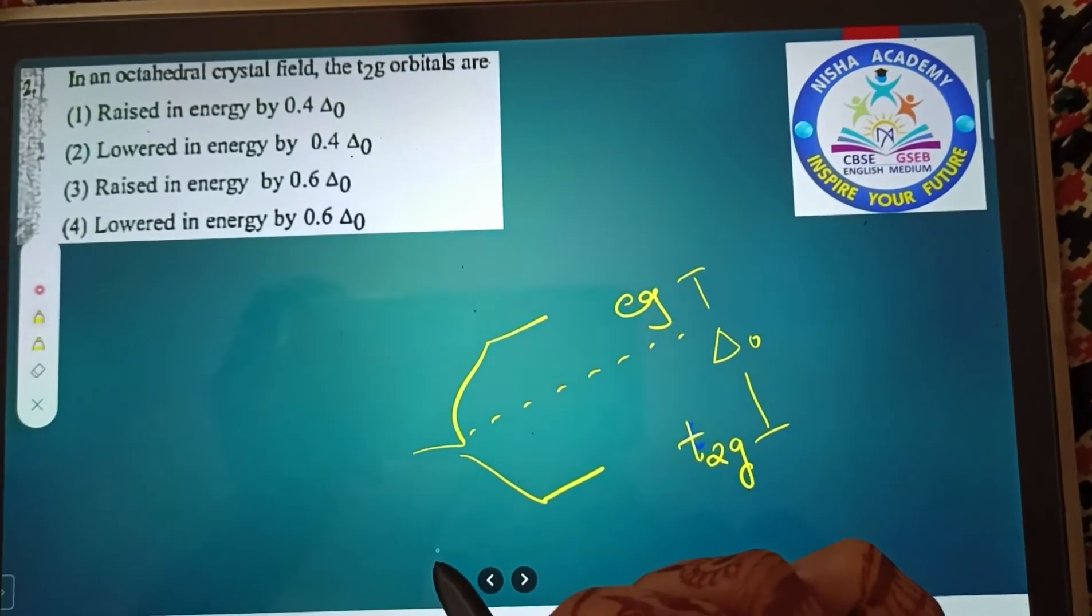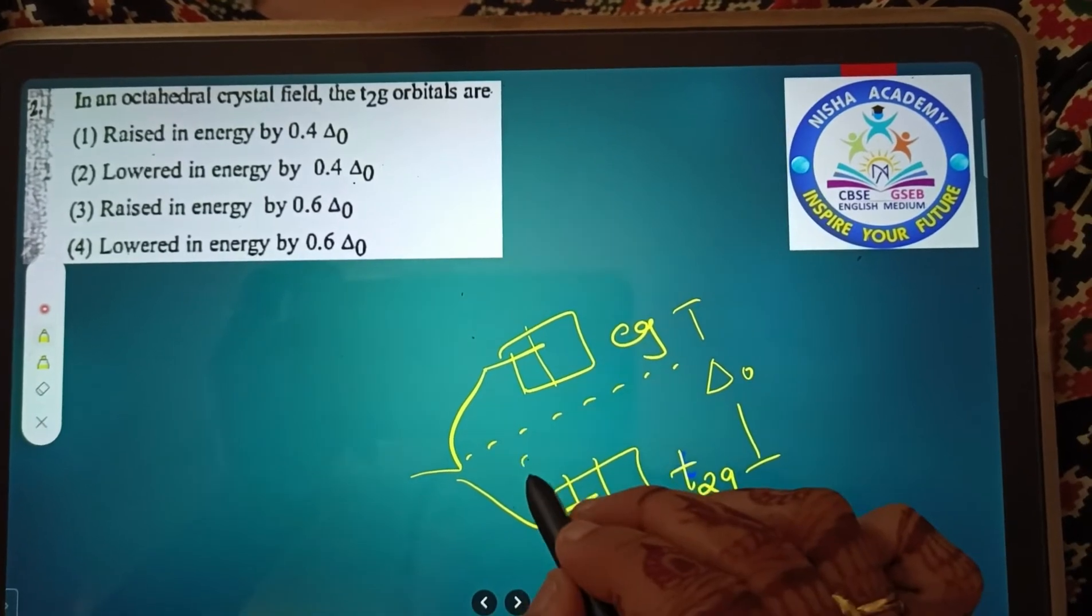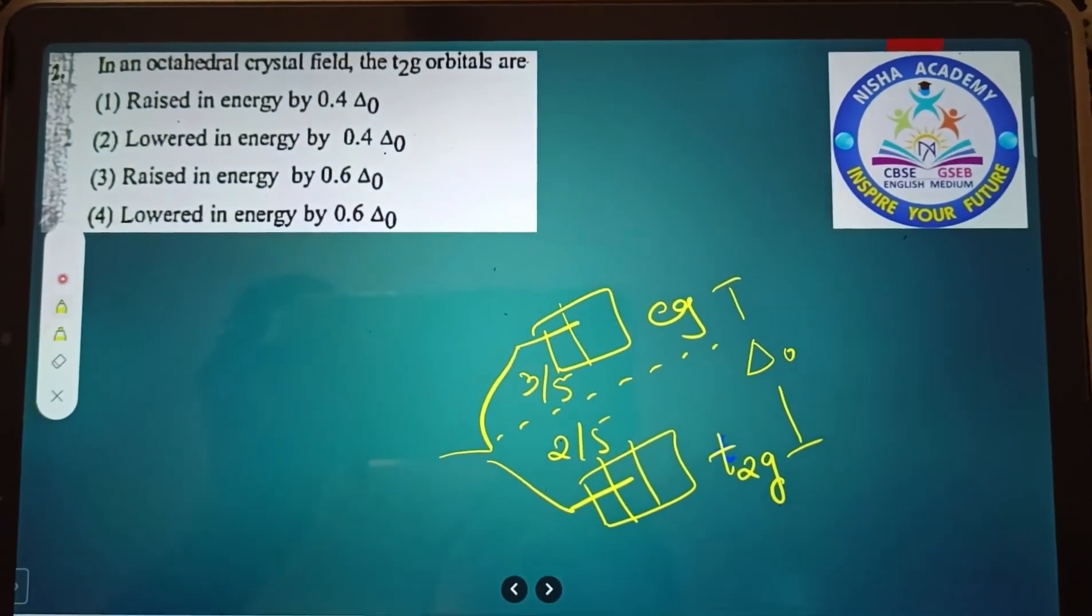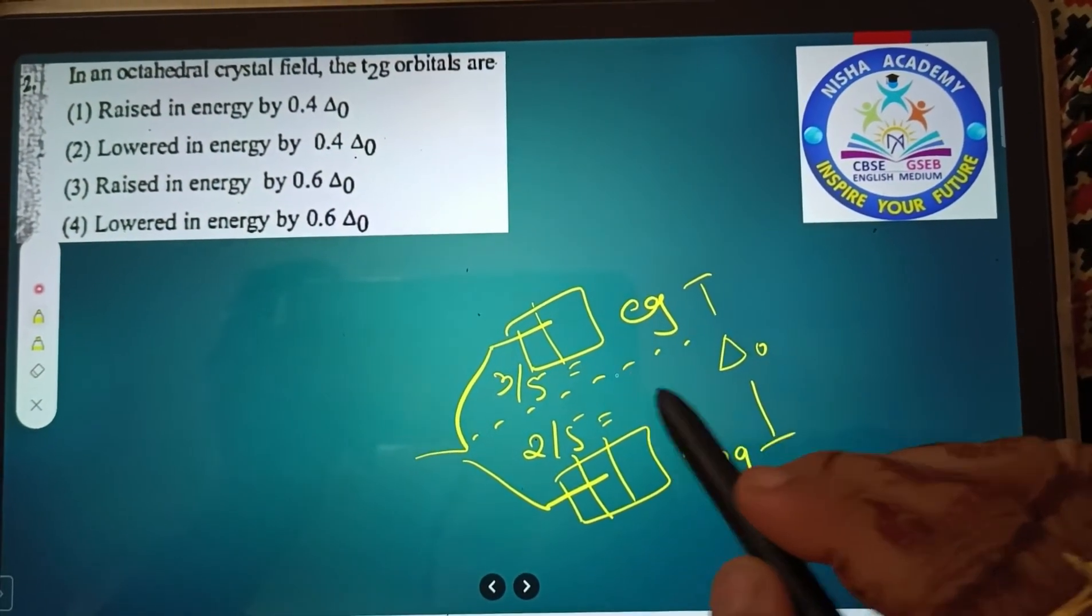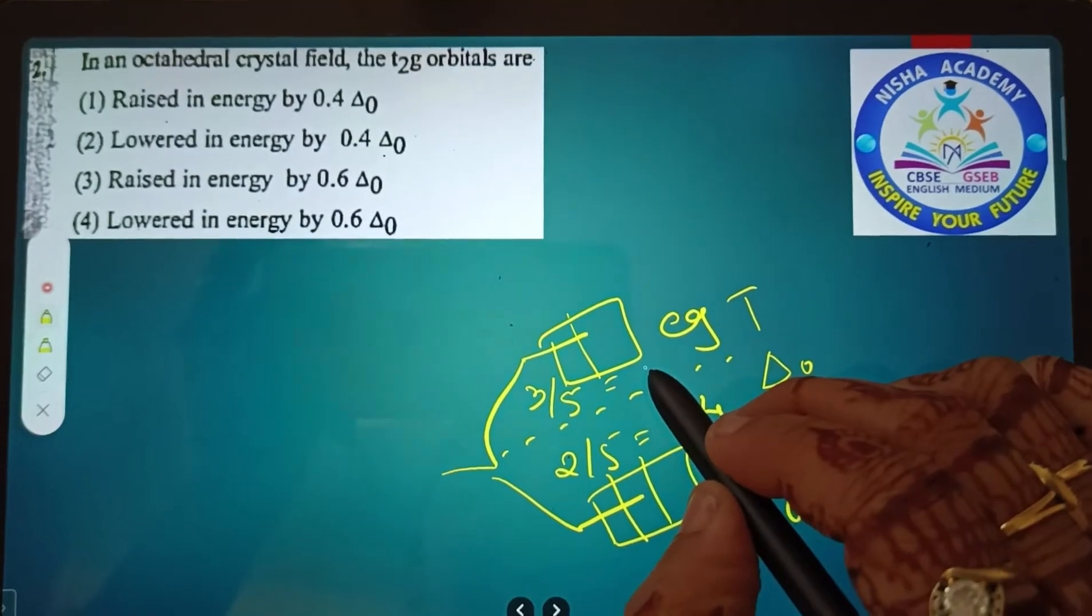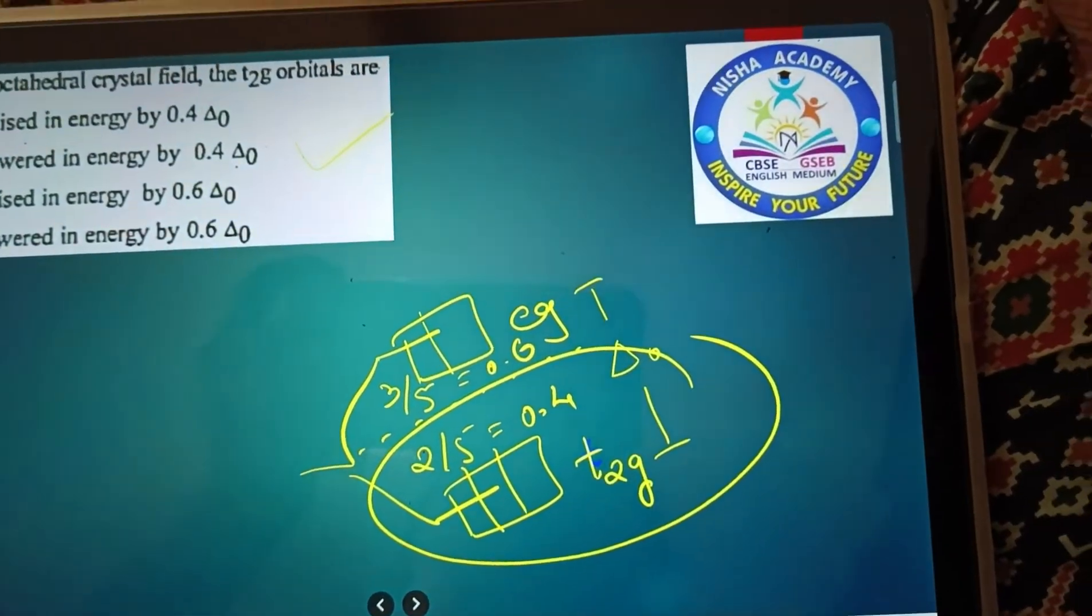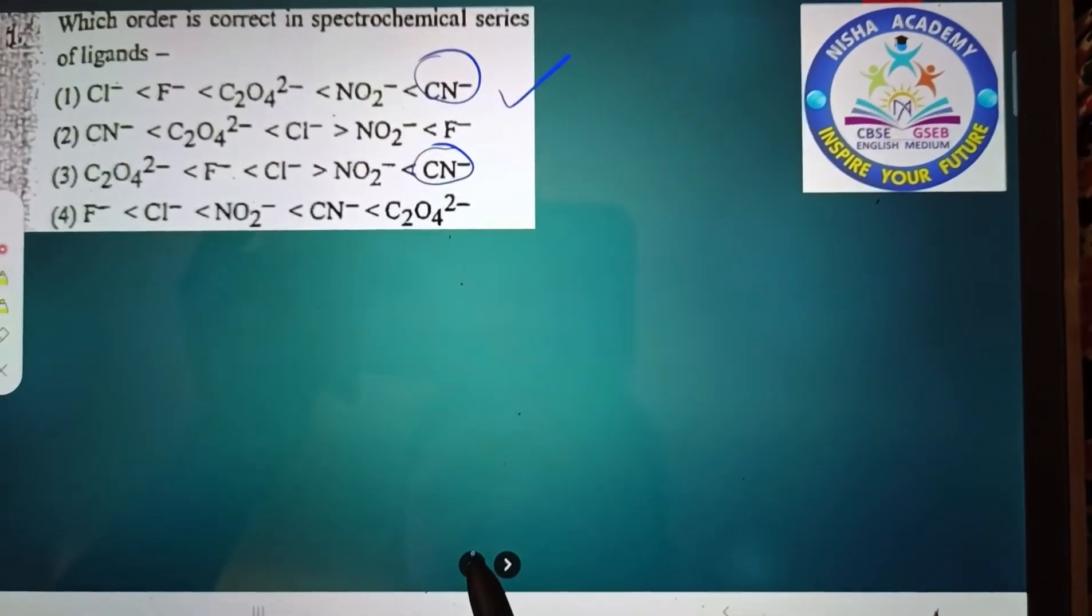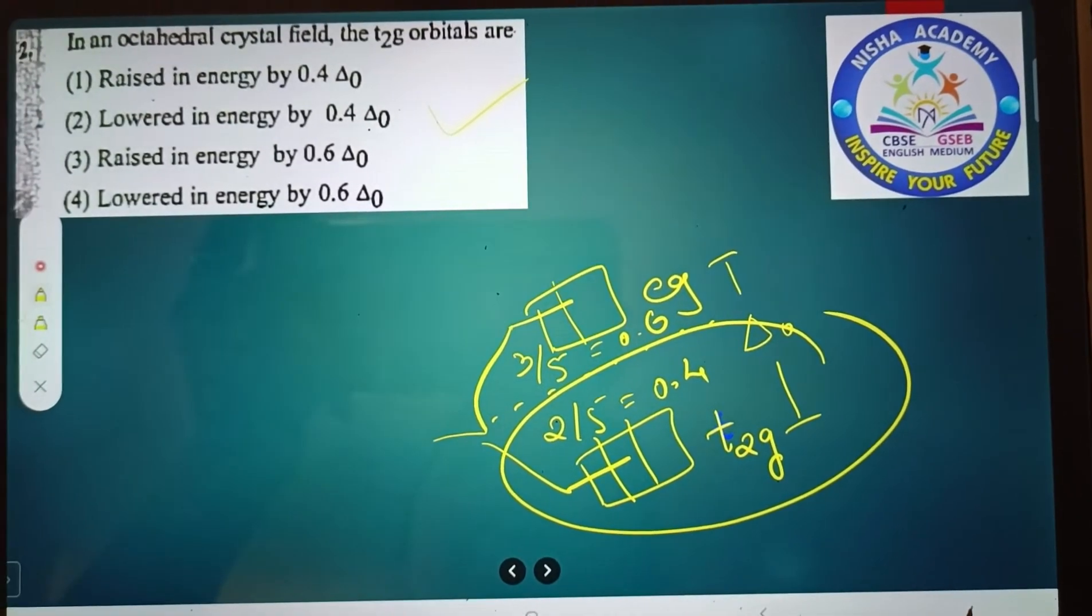The d orbitals divide into equal parts - three orbitals go down and two go up. The lower set gets 2/5 and the upper gets 3/5. So 2/5 means answer option 2. For t2g, it's 0.4 delta zero. The answer is complete - first one and second one, both options 1 and 2.